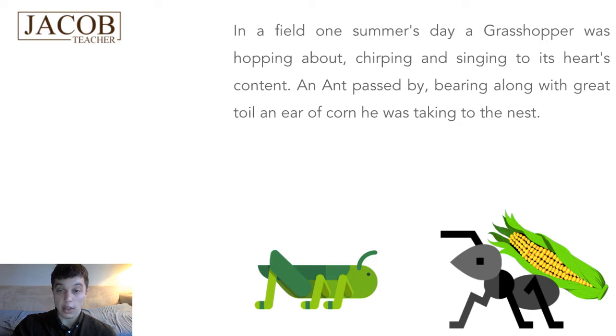In a field one summer's day, a grasshopper was hopping about, chirping and singing to its heart's content. An ant passed by, bearing along with great toil, an ear of corn he was taking to the nest. So, by the way, that's an ear of corn on the ant's back in the picture. You can see, we call that in English an ear of corn. It's kind of weird, right? It's a weird name for it. So, what's happening in this paragraph? We see a grasshopper hopping about, chirping and singing. Everything is fantastic in the grasshopper's life. Nothing is wrong. He's having a great time. Then an ant passes by, bearing along with great toil. Toil just means hard physical labor. That's toil. An ear of corn he was taking to the nest.